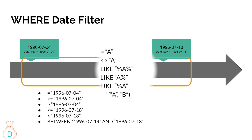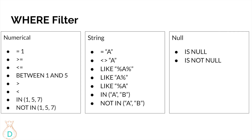The WHERE clause can filter more than just dates — you can filter numerical data, string data, and NULL values. For numerical data, you can use equals, greater than or equal to, less than or equal to, or BETWEEN. Greater than or equal to 1 includes 1 and above; less than or equal to 1 includes 1 and below. BETWEEN 1 AND 5 includes 1, 2, 3, 4, and 5. Greater than 1 starts from 2 if it's an integer.